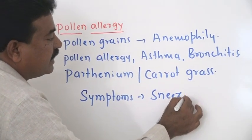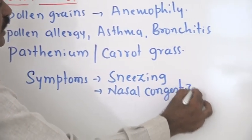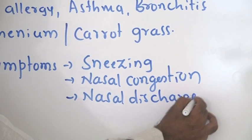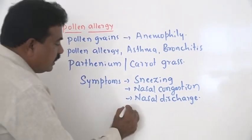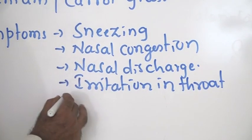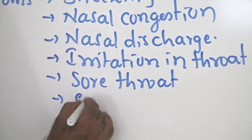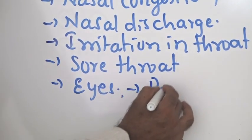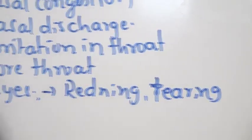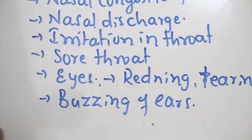If you take the symptoms of pollen allergy, the person shows sneezing, nasal congestion, nasal discharge - mucus discharge which may be watery or thick mucus discharge from the nasal tract, irritation in throat, sore throat, and even sometimes there may be reddening of eyes as well as tearing or budging of tears.